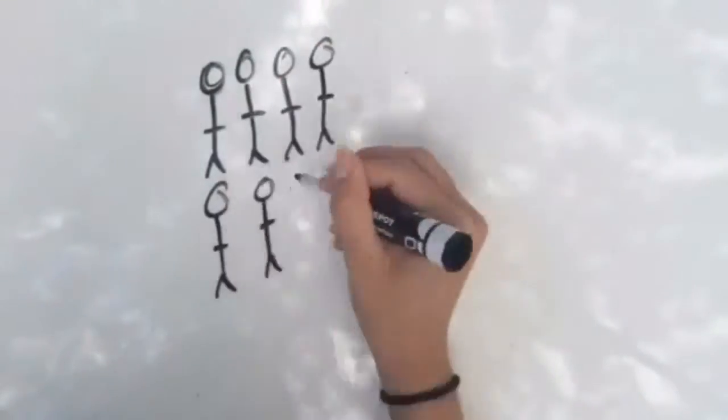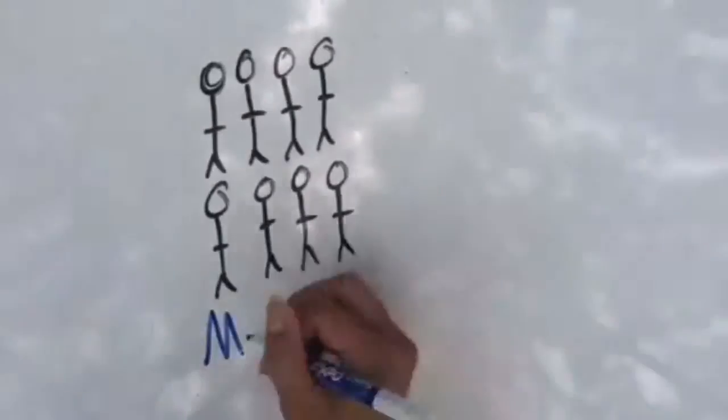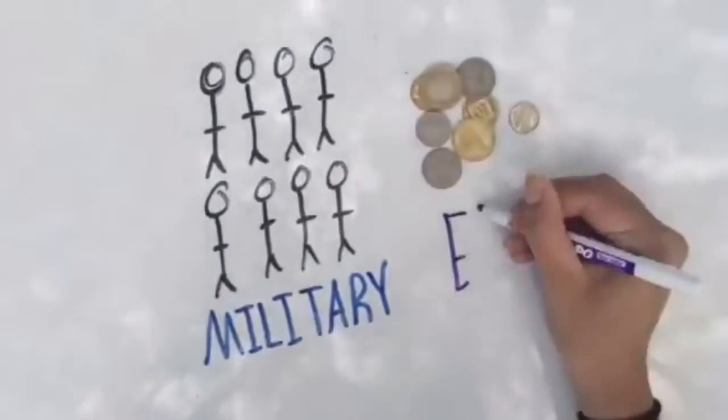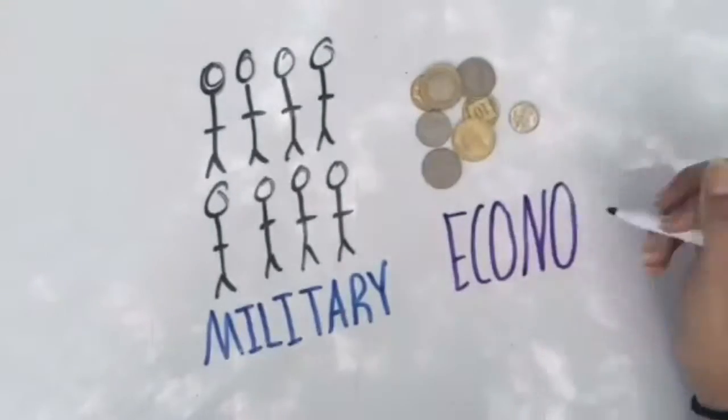Diocletian reigned at the end of the crisis of the third century and though he significantly stabilized and improved the empire's military and economy, he will forever be remembered as the worst persecutor of Christians in history.